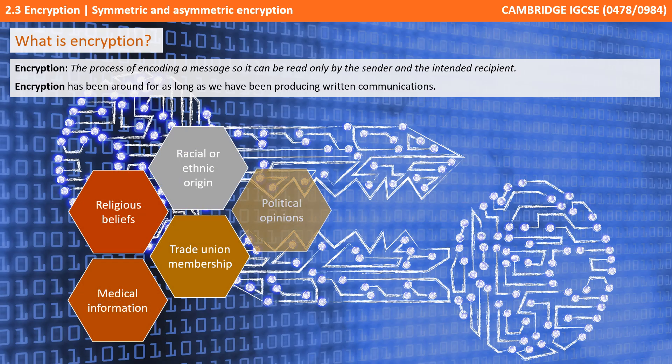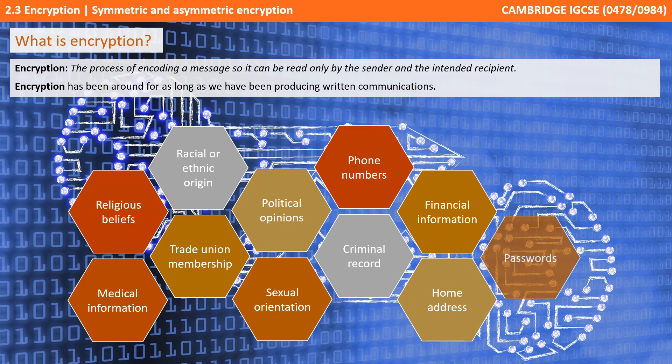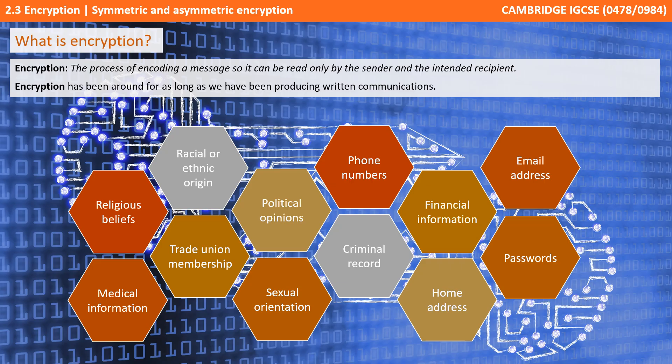So what exactly is encryption? It's the process of encoding a message so it can be read only by the sender and the intended recipient. Encryption has been around for as long as we've been producing written communications. In today's modern age where we easily and freely share vast amounts of information in electronic form, there are a number of types of personal and sensitive information which we may want to be encrypted.